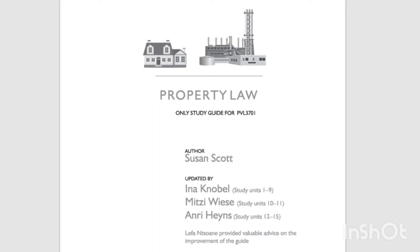2.2 Legal Object. A legal object can be defined as every object with which a legal subject has a legally recognized relationship. These legal objects may be divided into things, performances, immaterial property, and personality property. Each of these legal objects has its own characteristics which distinguish it from other legal objects. The rights and duties established by legal subjects in legal relationships pertain to one or more of the various kinds of legal object.